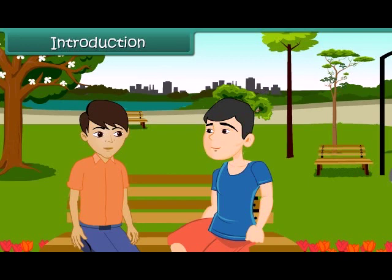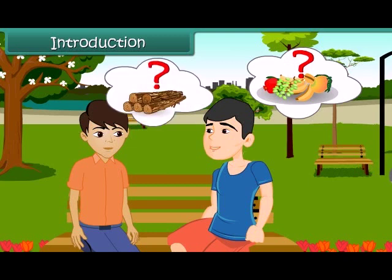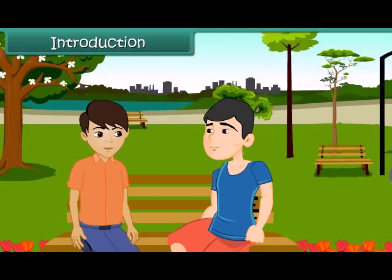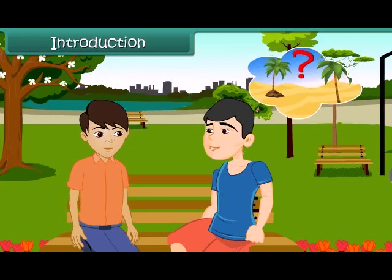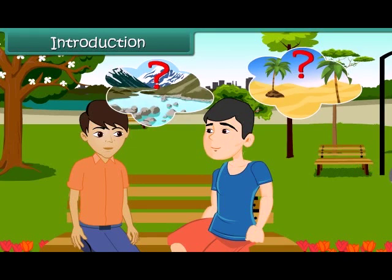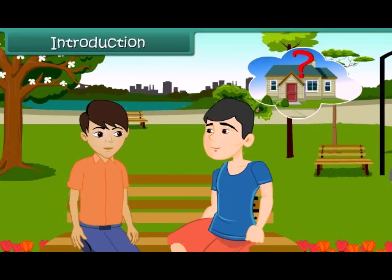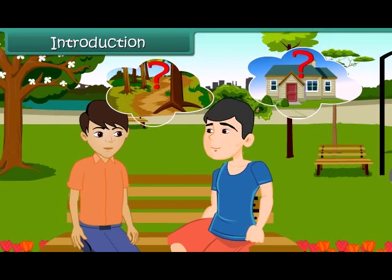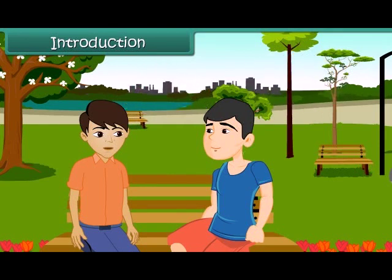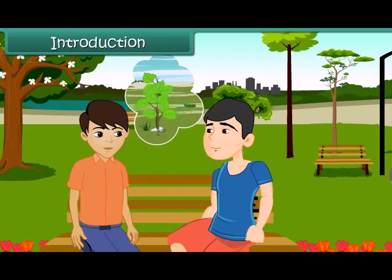What was the question? May I help you solve it? She asked what they are which give us fruits, give us wood, which can grow on land as well as in water, and which are found in homes as well as in forests. It's simple, dear. They are called plants.